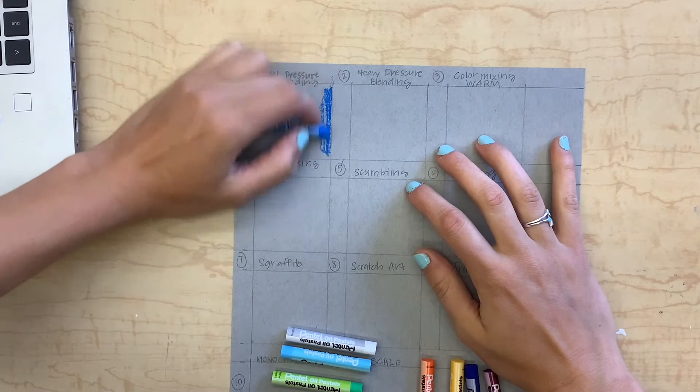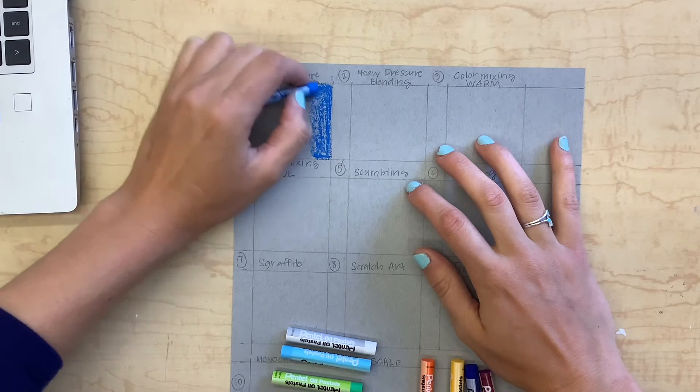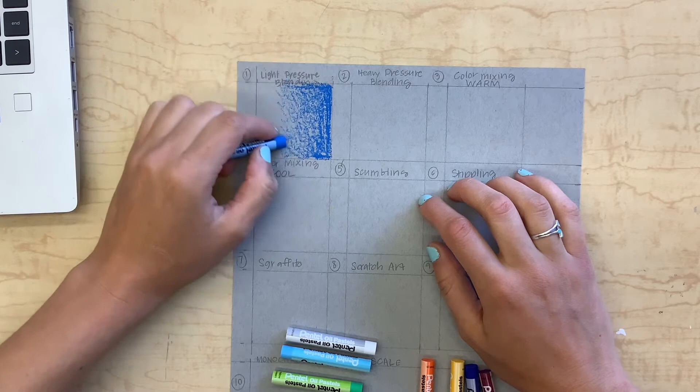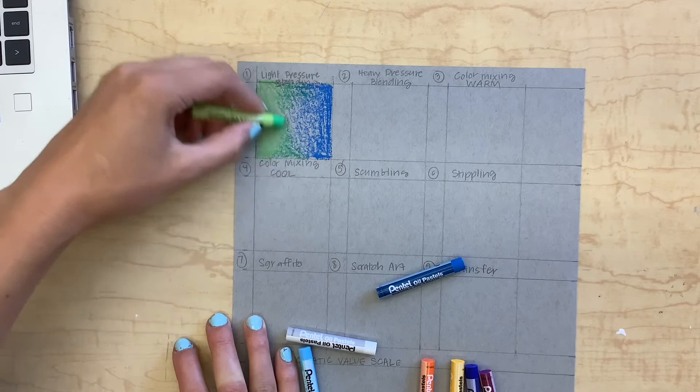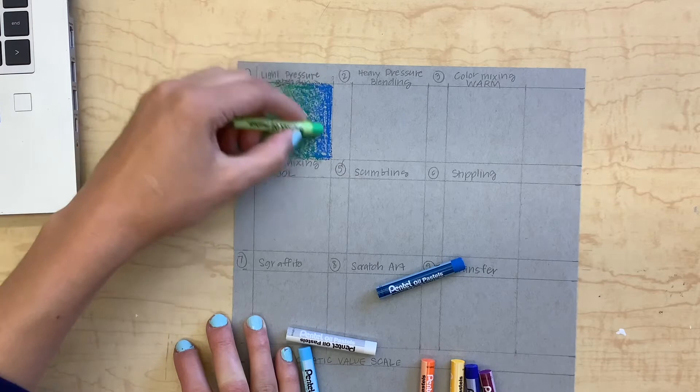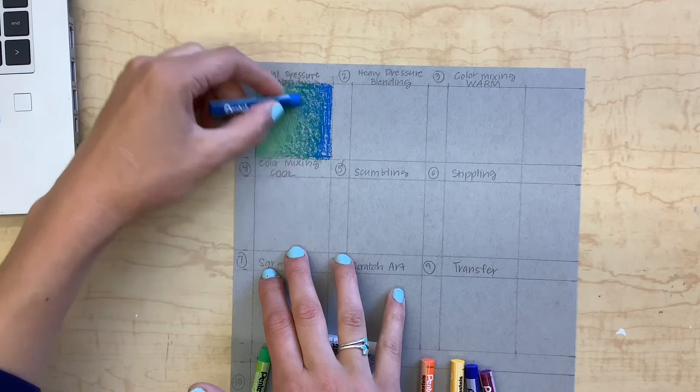The first technique we're going to create is light pressure blending. As a general rule with oil pastels, you want to start with the darker of the two shades. Here I've started with blue and then I'll add some green. I'm going to move my pastel with light pressure and little scribble lines, filling in the space, starting more darkly at the edge of the square and then fading it. You want to make sure you're overlapping the two colors. You can start with one color and then move to the other. Here I went back with the blue and I'm just evening that out.